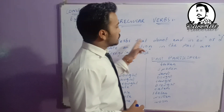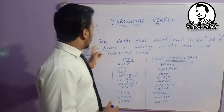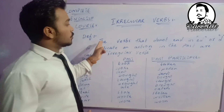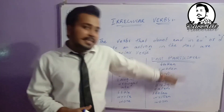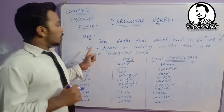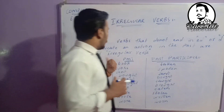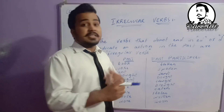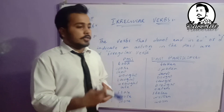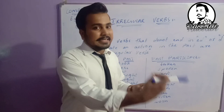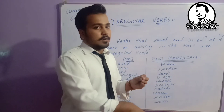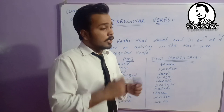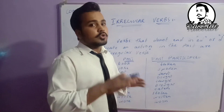Definition: The verbs that do not end in 'ed' or 'd' to indicate an action in the past are called irregular verbs. The most common mistake students make is adding 'ed' or 'd' to irregular verbs. You need to know that we are not supposed to use 'ed' or 'd' with irregular verbs — if you do, the sentence will be totally wrong.